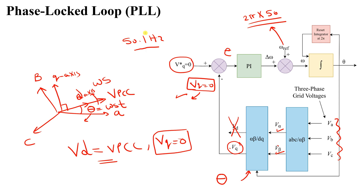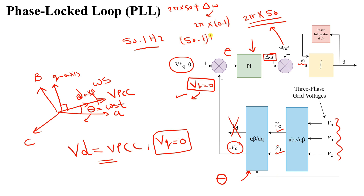The deviation from the reference frequency, denoted delta omega, is obtained through the PI controller. The PI controller takes the error between VQ and the VQ reference of zero and gives us a signal delta omega. By adding omega reference (2π × 50) plus delta omega, we estimate the actual grid angular frequency — for example, 2π × 50.1 Hz if the grid frequency is 50.1 Hz instead of 50 Hz.